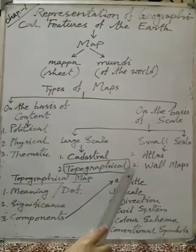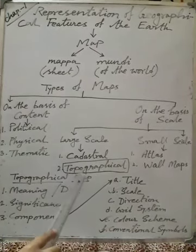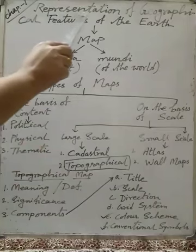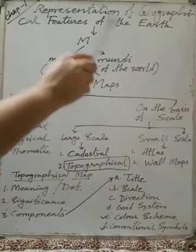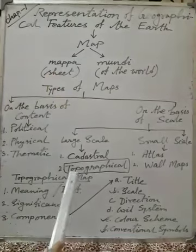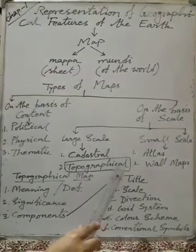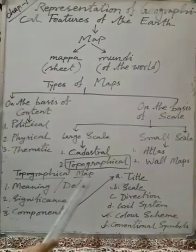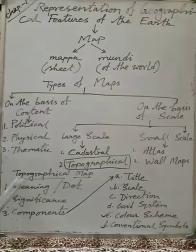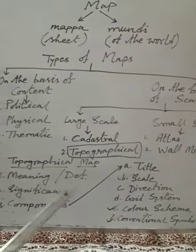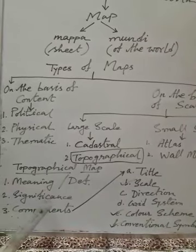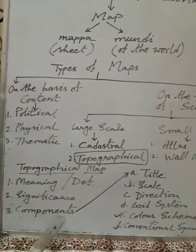Out of all seven types, our topic is the topographical map. Our chapter heading is 'Representation of Geographical Features of the Earth,' and this is mainly possible with the help of topographical maps. Today we will learn: first, the meaning or definition of topo map; second, its significance or importance; and third, its components.